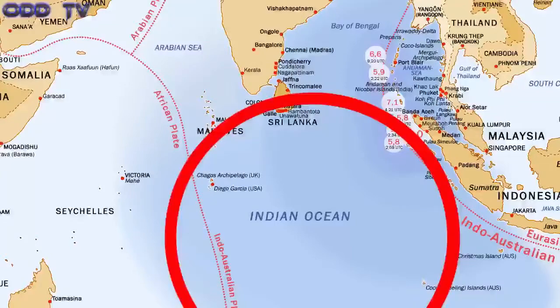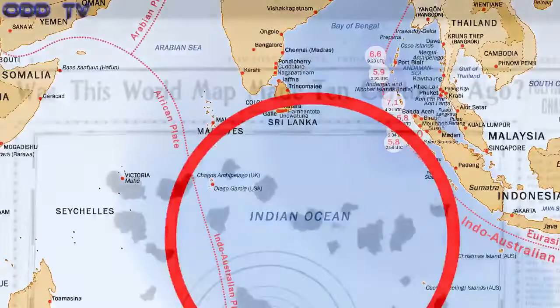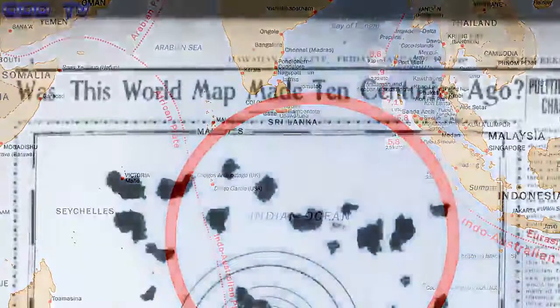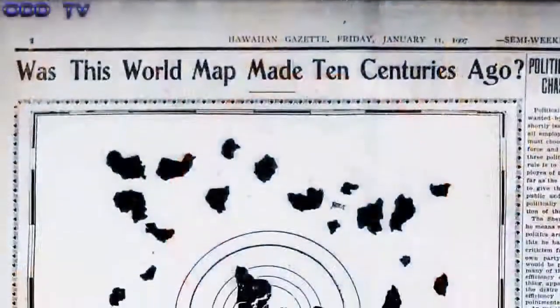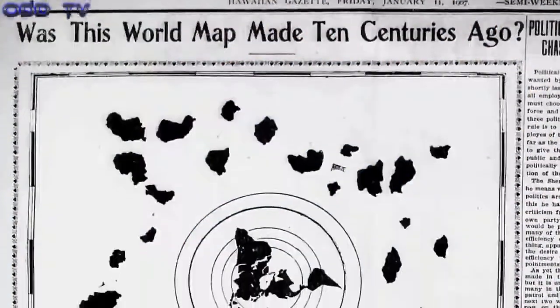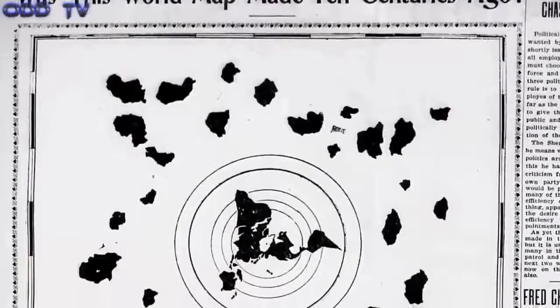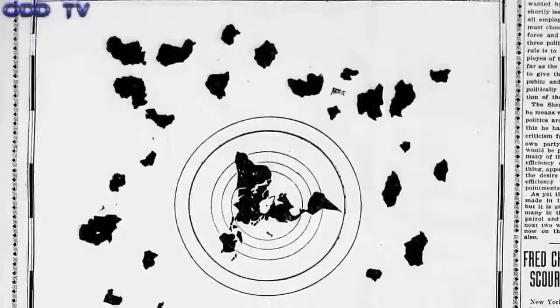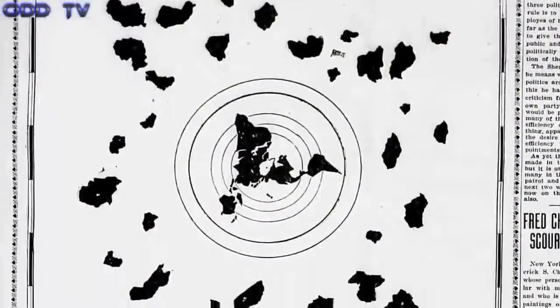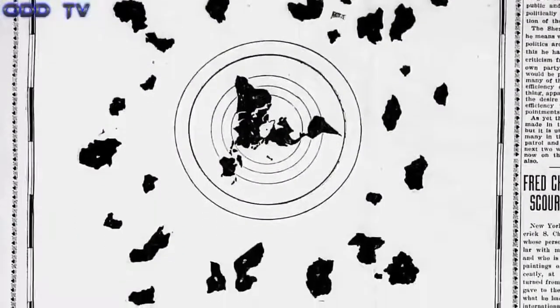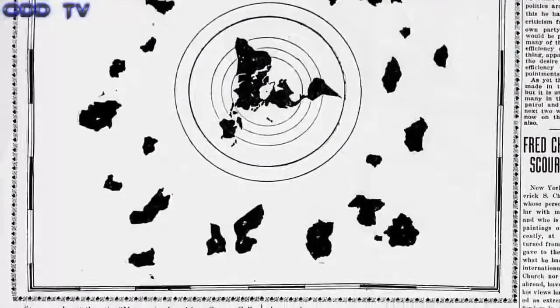If that uninhabited land was on a globe, it would be in the Indian Ocean. A recent discovery of an old Buddhist map in a newspaper from 1907 seems to support the idea of a vast plane with much more land.